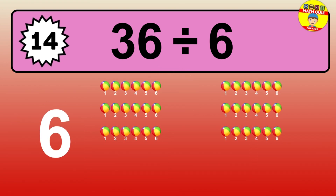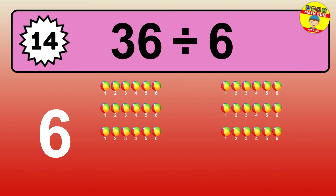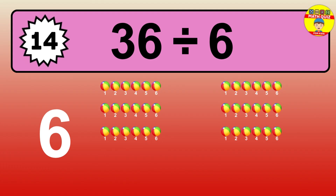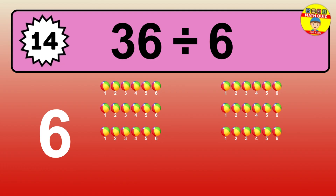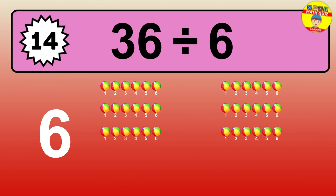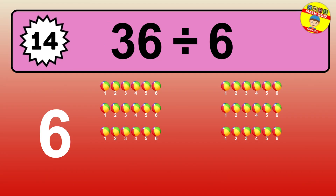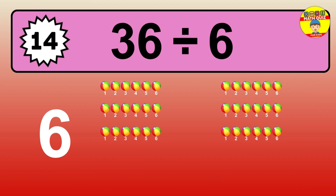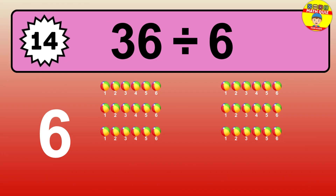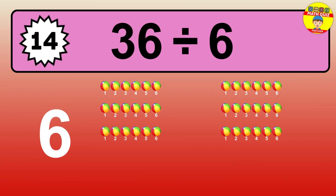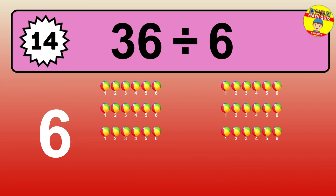54 divided by 9 — time to think. Let's go to the solution. Divide the number 54 by 9. Each group contains 9 units, so dividing 54 by 9 results in 6 equal groups. Thus, the result is 54 divided by 9 equals 6.